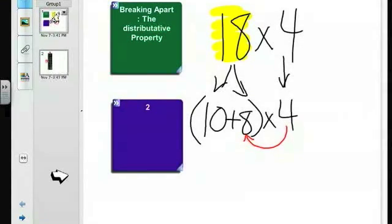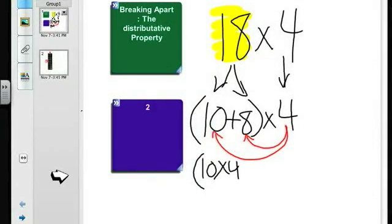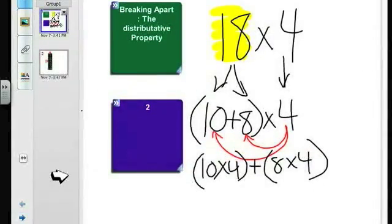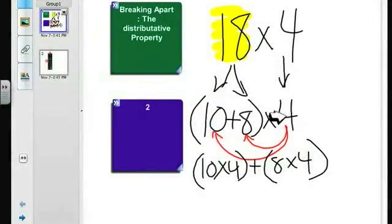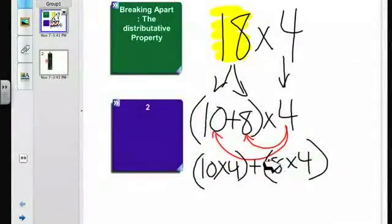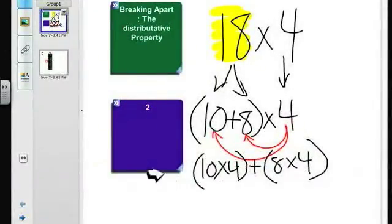So what we end up getting is two multiplication problems. 4 times 8, 4 times 10. So we write this further into the problem by taking 10 times 4 and then we add that with 8 times 4. So we've distributed the 4 between the 8 and the 10. So we get 4 times 8 and 4 times 10.